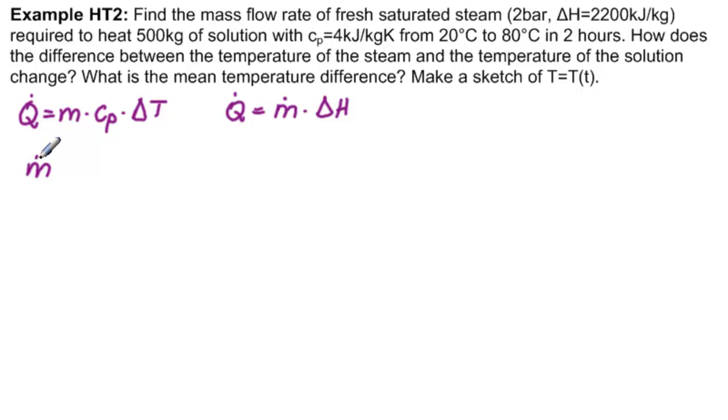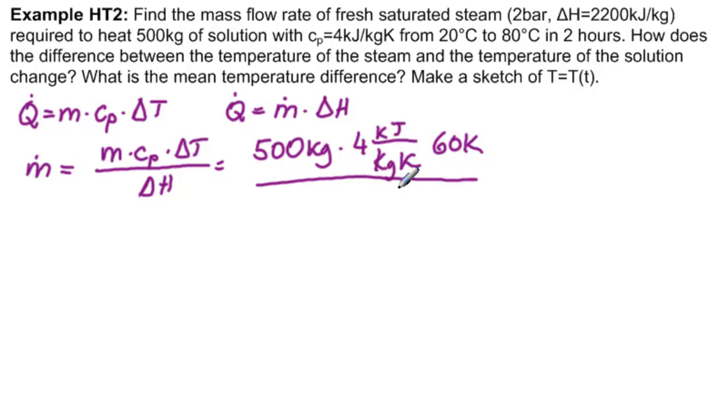We have the change in M is equal to M, the mass, times Cp, times delta T over delta H, which gives us 500 kilograms times 4 kilojoules per kilogram Kelvin. The difference of these two temperatures in Celsius is the same as the difference there would be in Kelvin. So we can write 60 Kelvin divided by 2,200 kilojoules per kilogram.